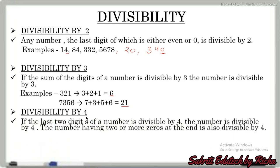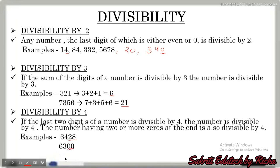Next is divisibility by 4. If the last two digits of a number are divisible by 4, then the number is also divisible by 4. So this was about divisibility by 4.